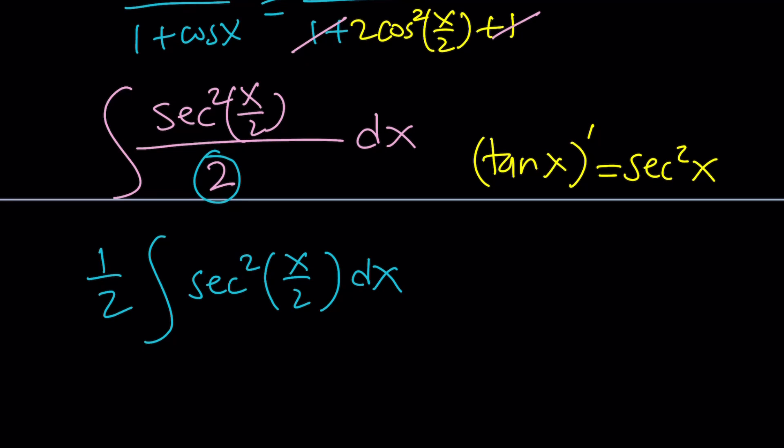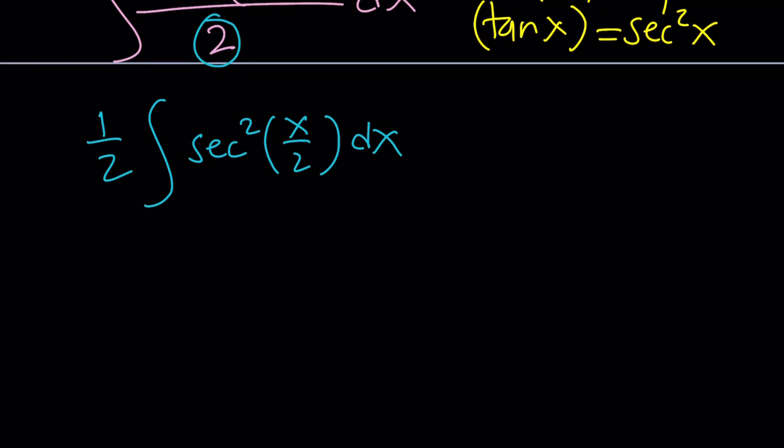X over 2 is the argument. But if you differentiate this to go back, then you're going to get an extra 1 half from chain rule, which you have to make up. So this is actually 2 times tangent x over 2, so that the 1 half is offset with the 2.